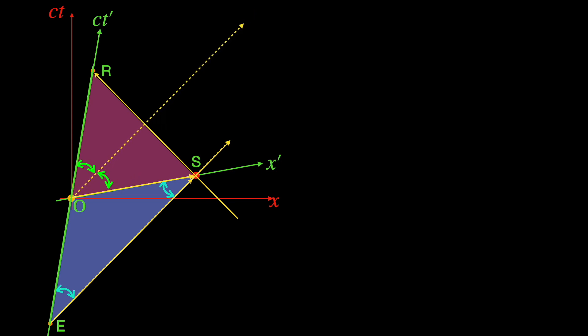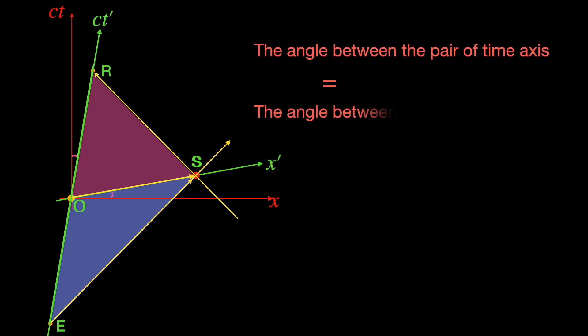Thus you see the photon world line through the origin O cuts the angle ROS into two equal halves and also the right angle between the space and time axis of the rest frame into two 45 degree angles. Therefore the two left over angles are obviously equal to each other. So the angle between the two time axis belonging to the rest frame and the moving frame is equal to that between the two space axis belonging to the rest frame and the moving frame.